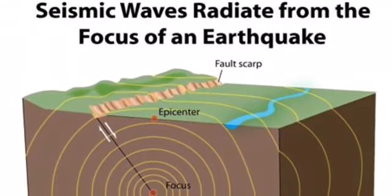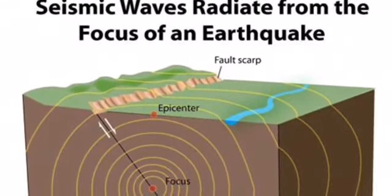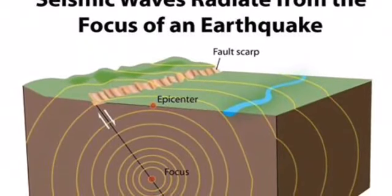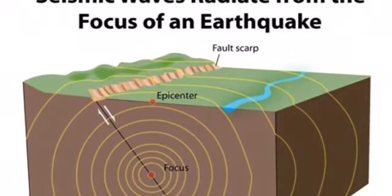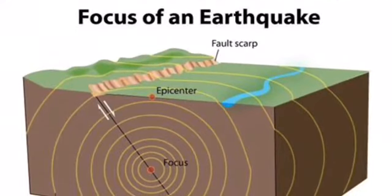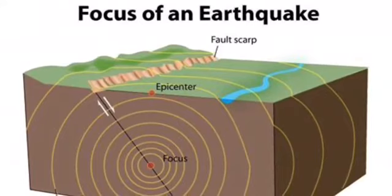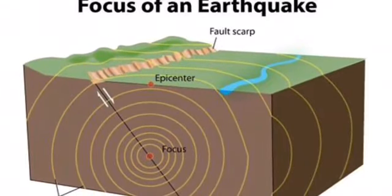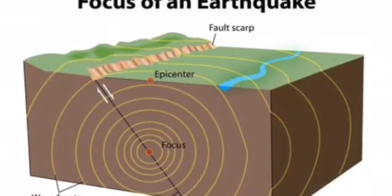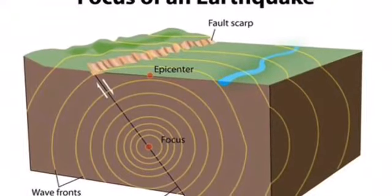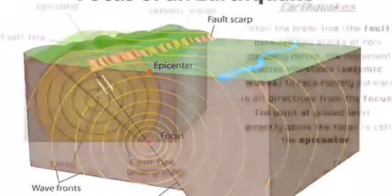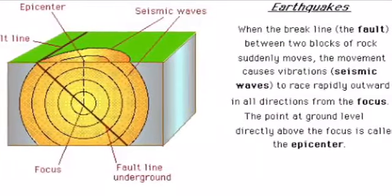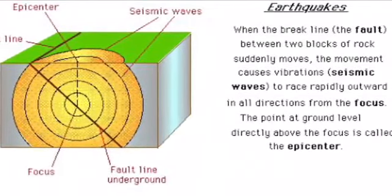A sudden movement or disturbance in the lithosphere is called an earthquake. It can be caused by volcanic eruption, underground nuclear explosion, collision of a meteor, or movement of tectonic plates. When tectonic plates move, they rub against each other and become interlocked. The force pushing the plates from beneath creates tremendous pressure; as the pressure builds and pushes the plates apart, the sudden movement sends waves of high energy in all directions — these are called seismic waves.